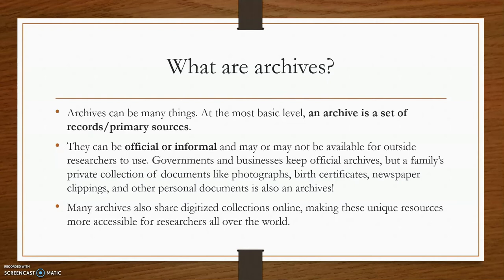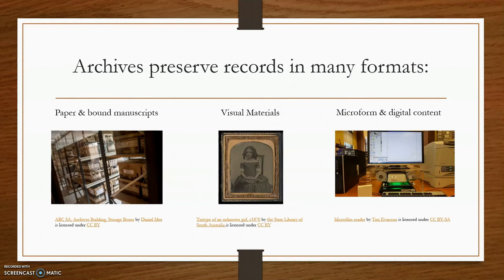One really good thing about living in the 21st century is that many archives have digitized their collections and shared them online, which makes these wonderful collections more accessible for researchers all over the world. Archives can contain paper and bound manuscripts such as ledgers and journals, visual materials like photographs and artwork, and digital content. Archivists now manage hard drives and other born-digital content, as well as microformed or digitized contents — information taken into a new medium for preservation purposes. You need to keep an open mind as you explore these resources.